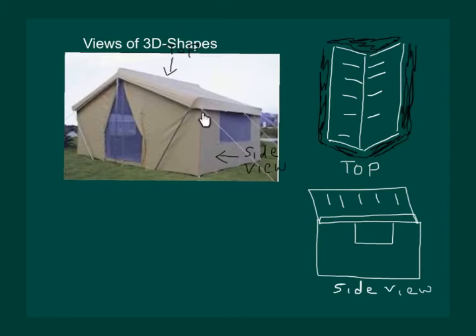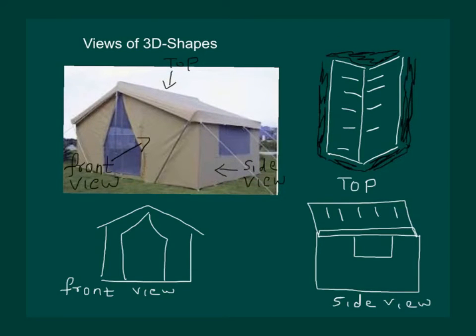If we see from the side, our side view would be something like this. We can see a rectangle, a window and a parallelogram. And our front view would be something like this. So we can see that from different angles, that is top, side and front, we have a different picture of the same hut.